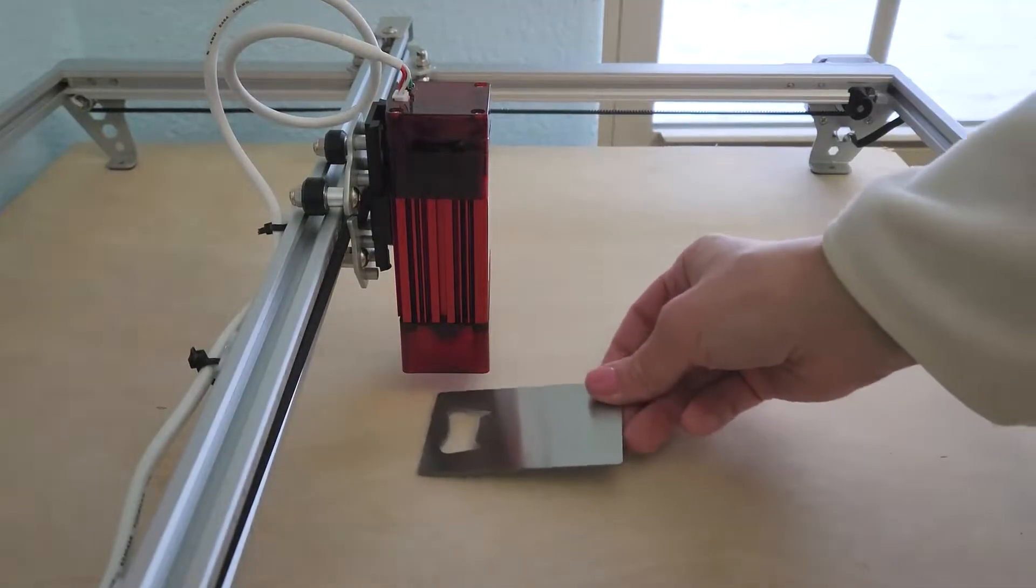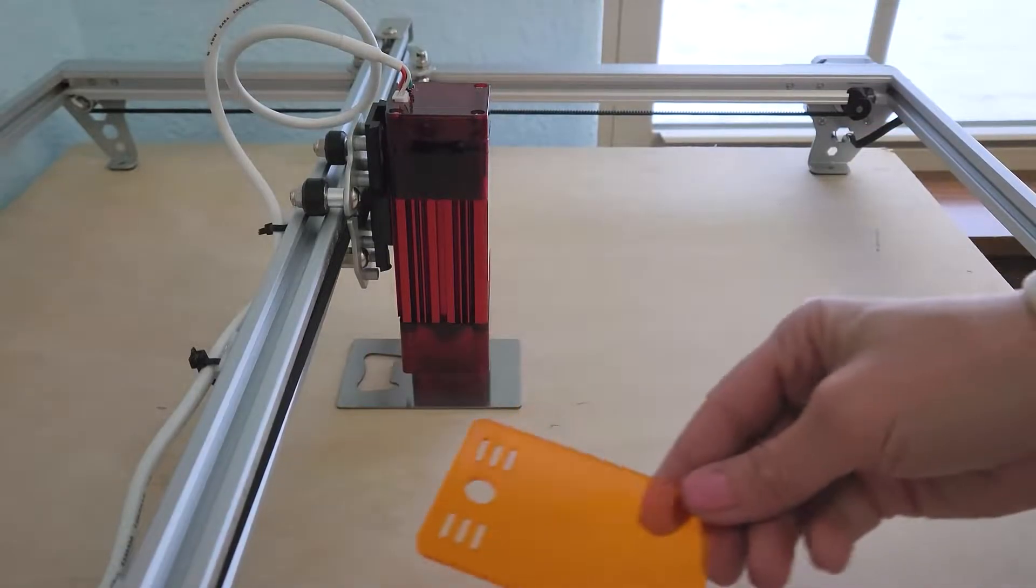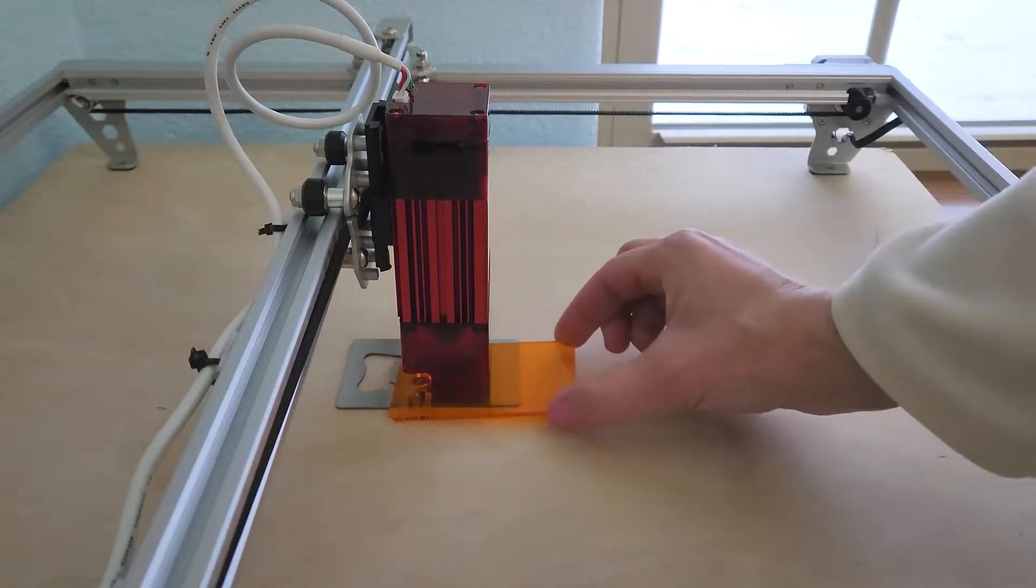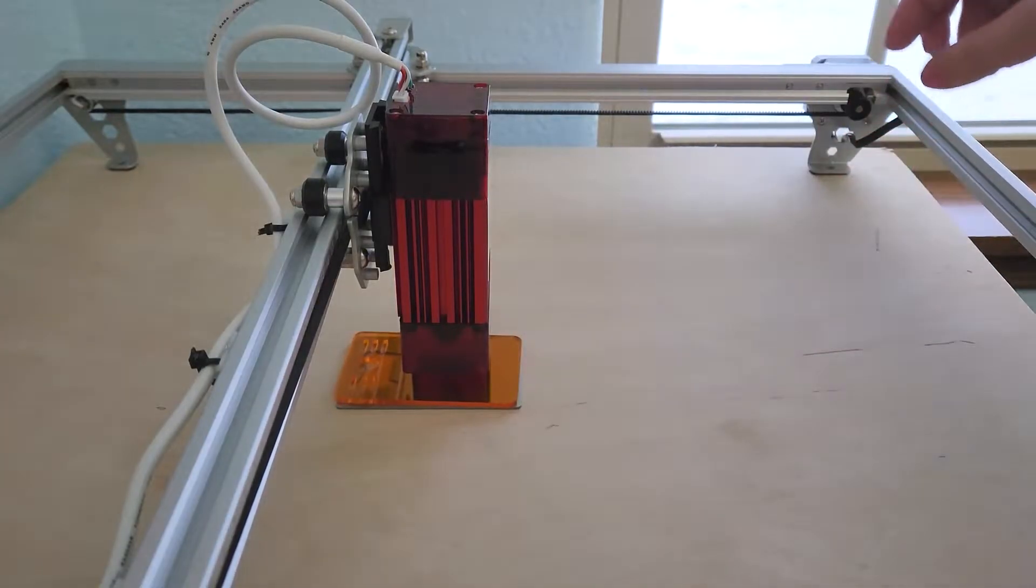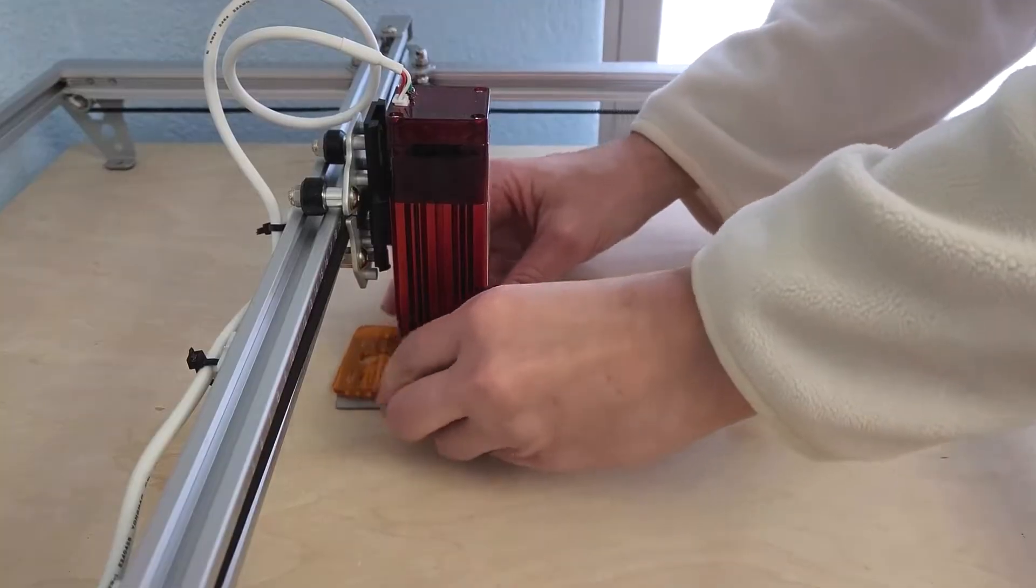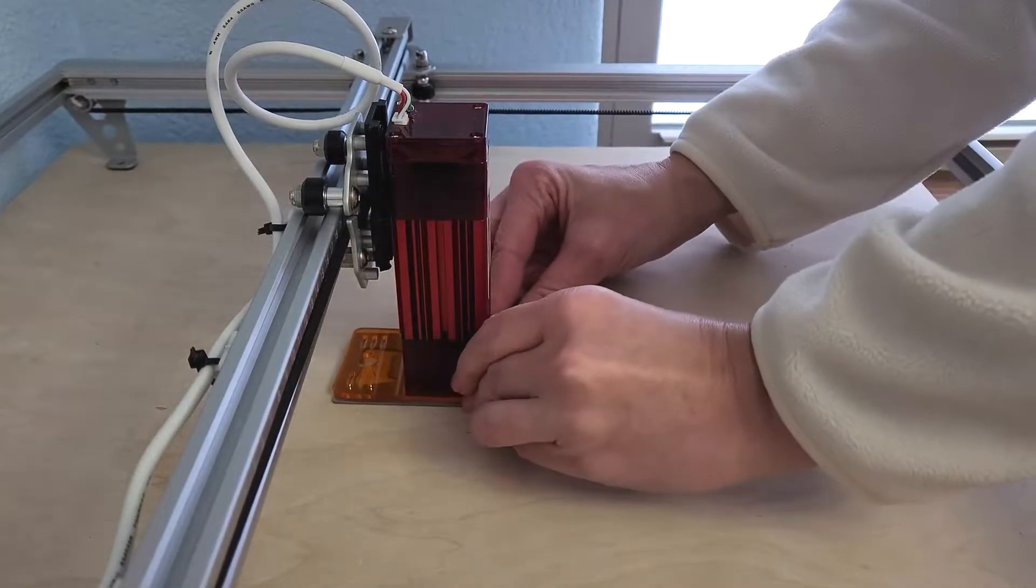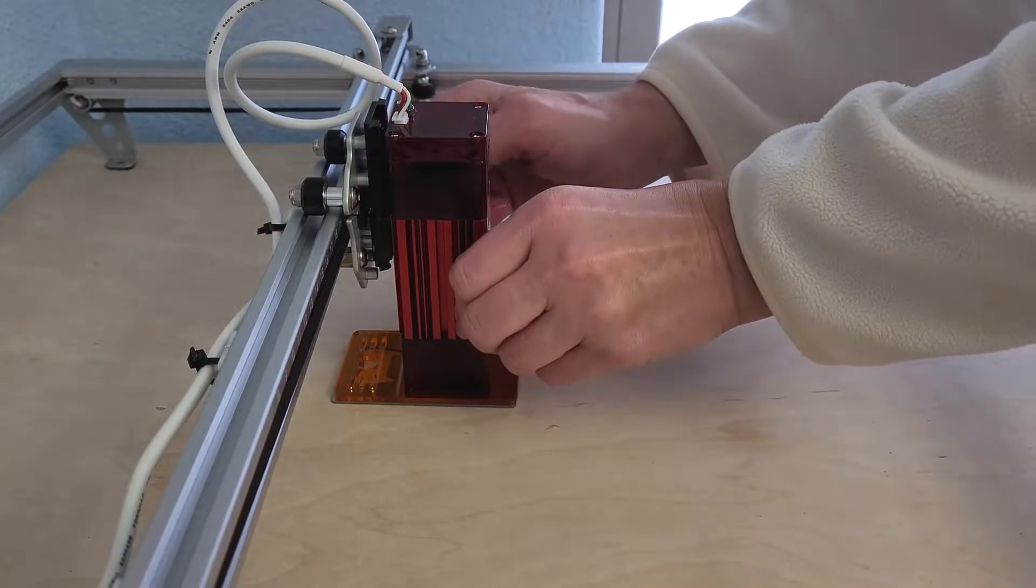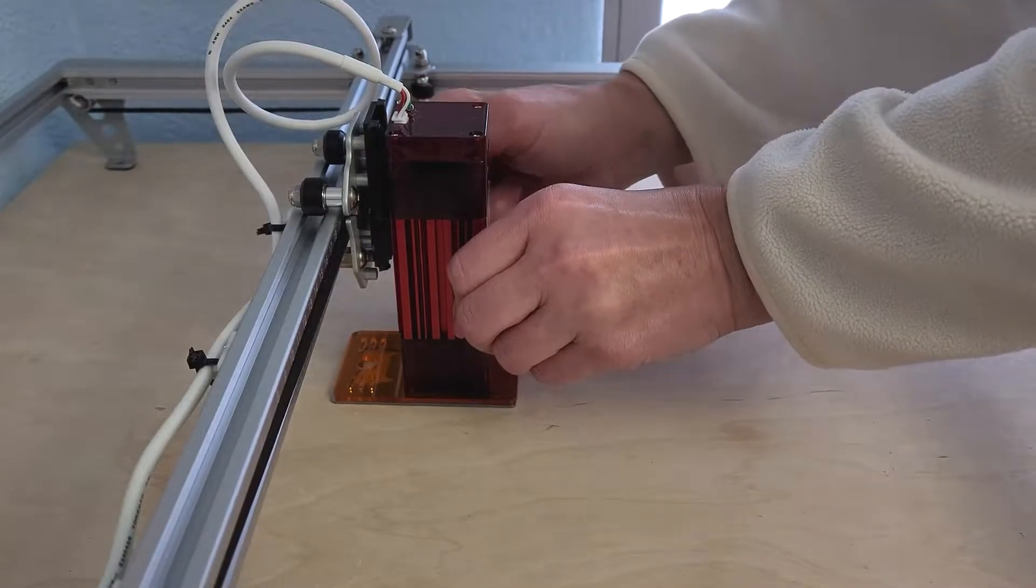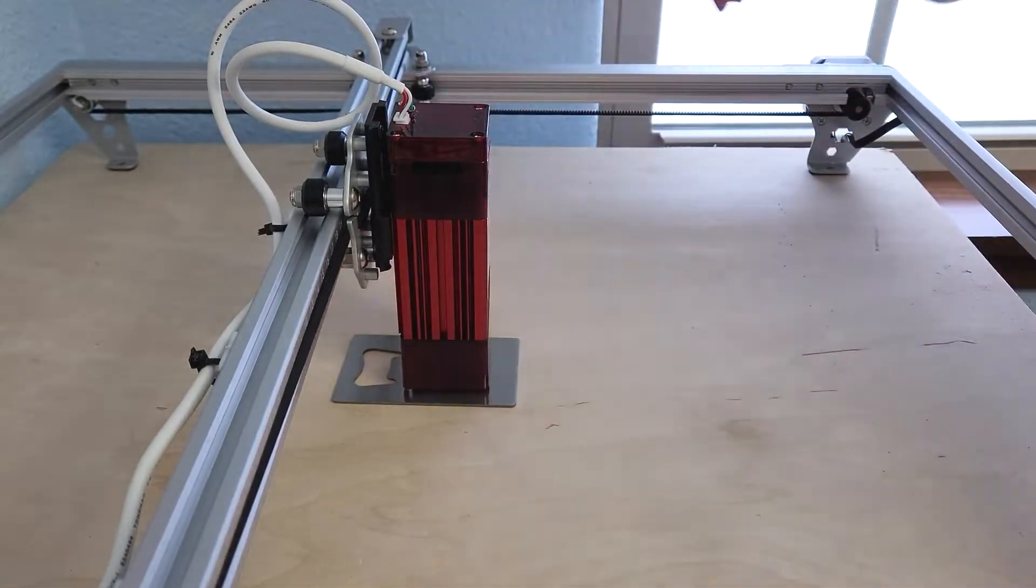The first thing we want to do is focus this laser. We have to do this manually. I'm going to put the bottle opener underneath the laser and then use this piece that comes with it, lay it right on top. Then there is a set screw on the side of the laser here. I'm just going to lower it until the plastic piece sits right on top of that amber colored one, tighten the set screw, and then pull out that amber colored plastic. Now we are perfectly focused.